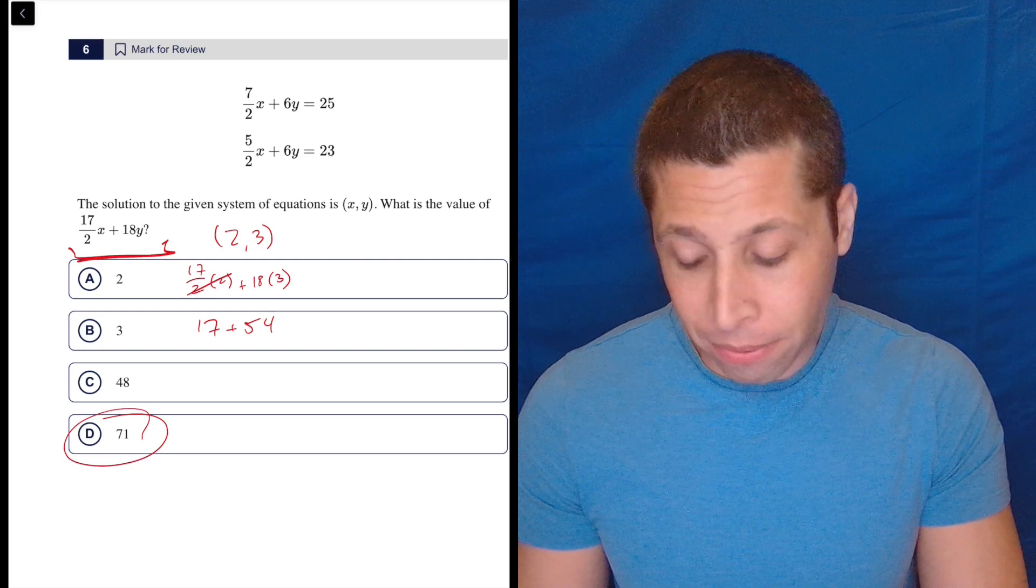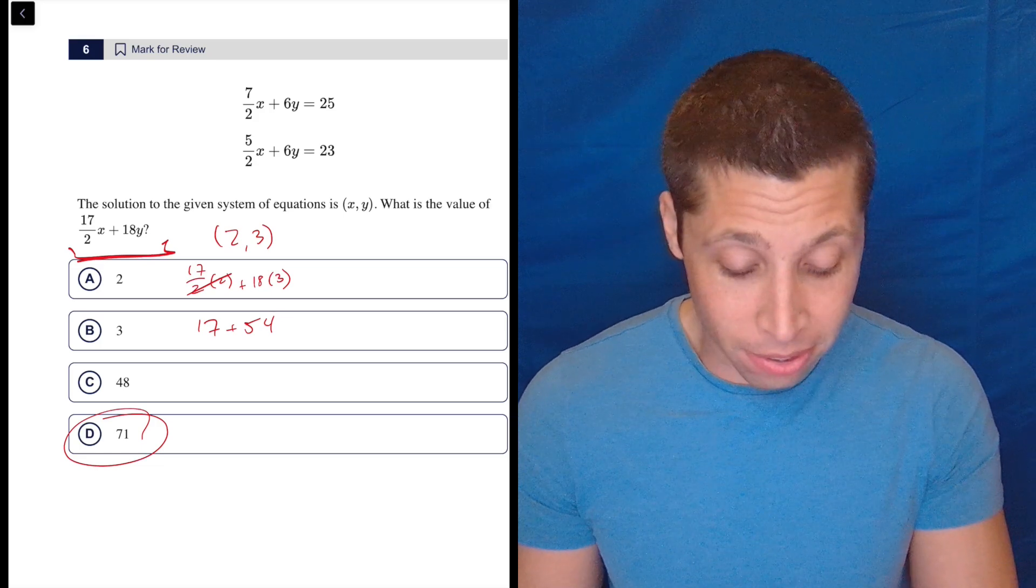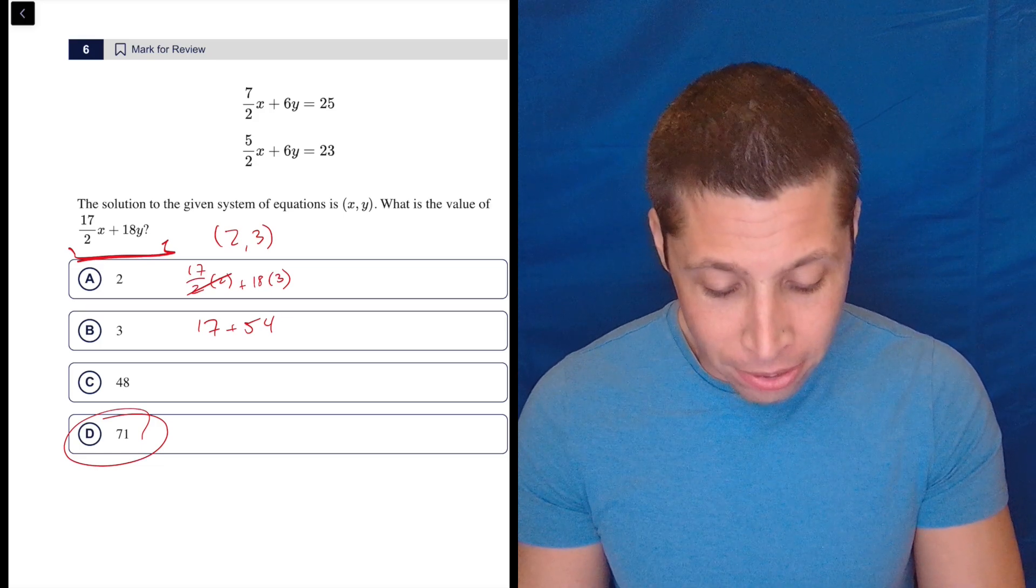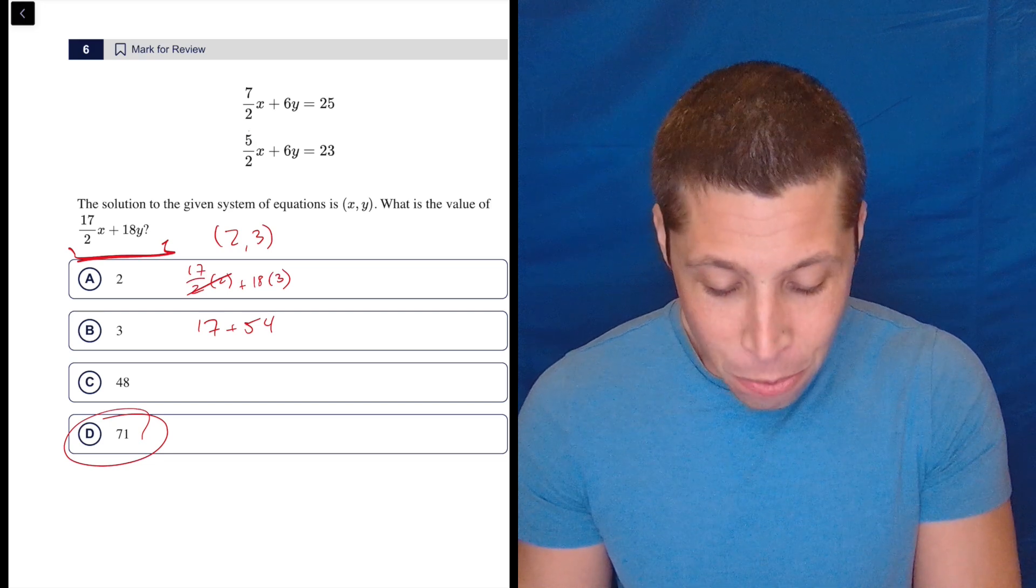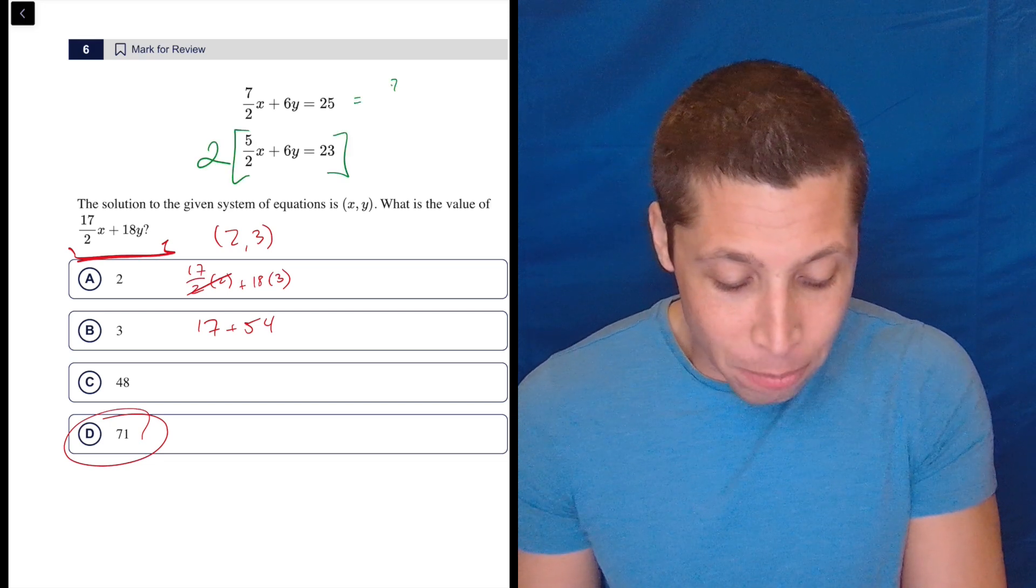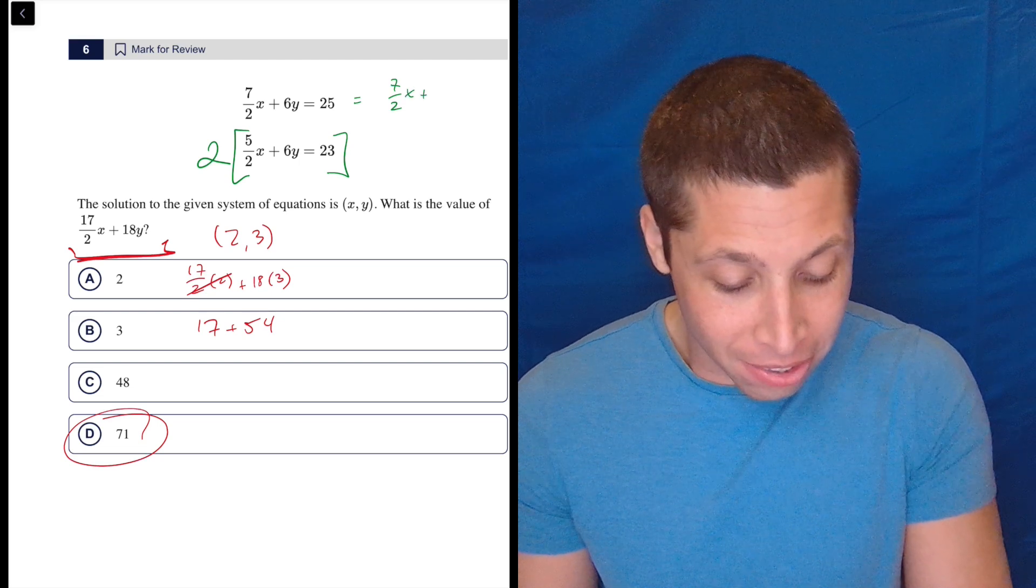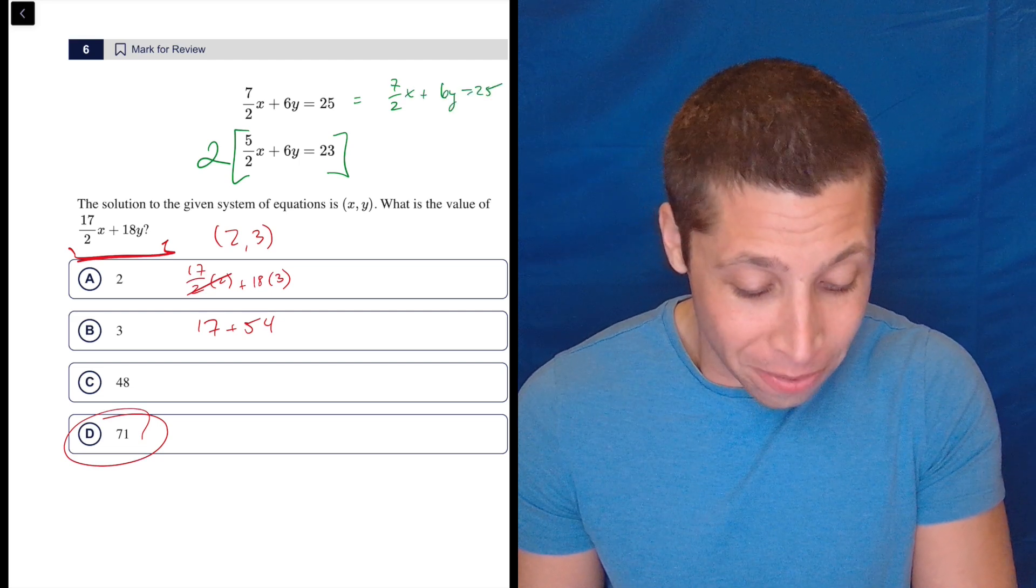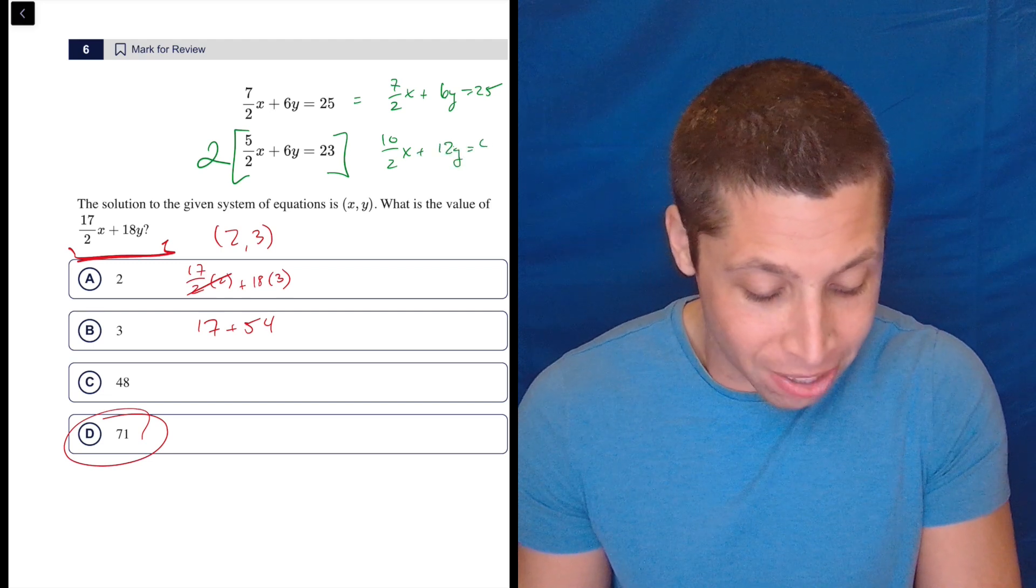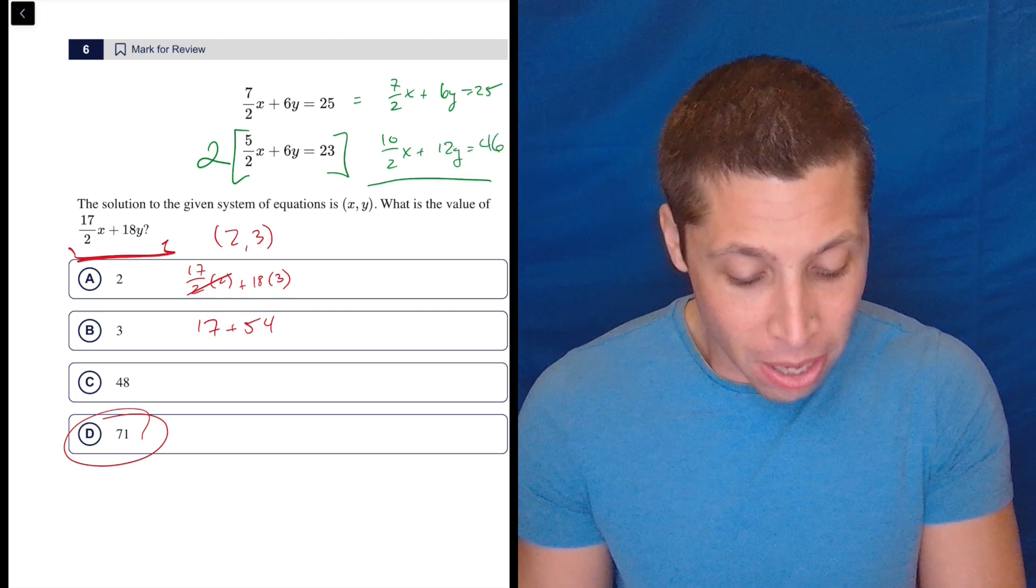Now, some of you, and I forget if the college board's explanation does this, you're going to be like, ah, there's a shortcut. You can just add these up. And if you multiply this by 2, then you add them. You have 7 halves x plus 6y is 25. And now you have 10 halves x plus 12y is 46. Add those up.